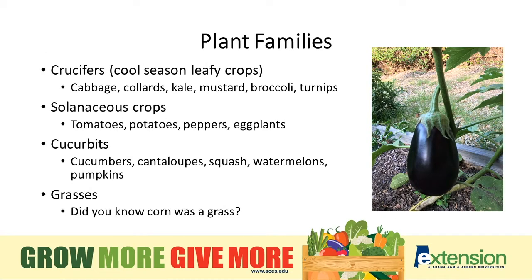When we talk about plant families, we divide those families down to four major areas when we're talking about garden vegetables. Crucifers, or cool season leafy crops, include cabbage, collards, kale, mustard, broccoli, and turnips.